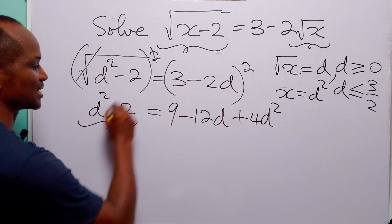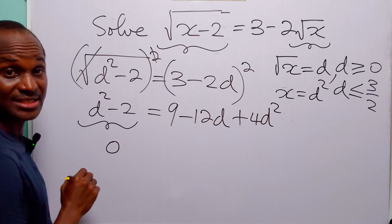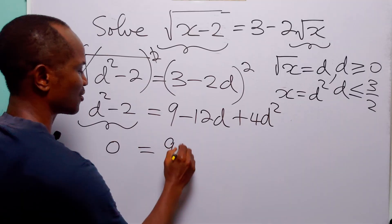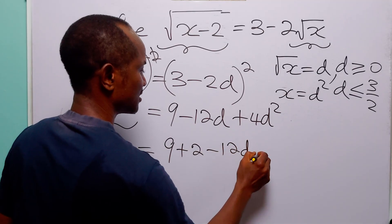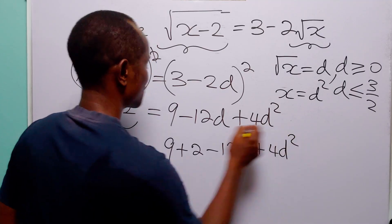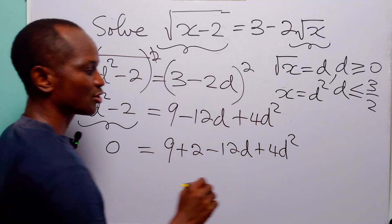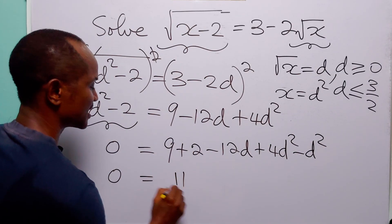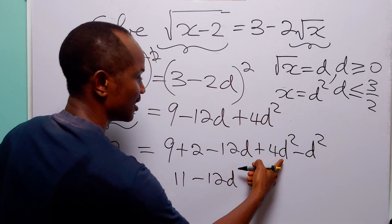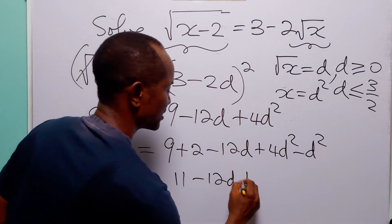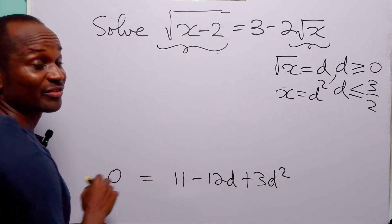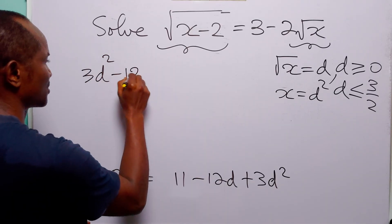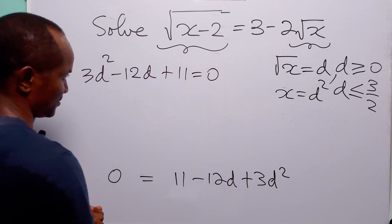Now let us move these two terms over to the right-hand side. When we do that, we have 0 on the left-hand side, equal to 9, minus 2 going over becomes plus 2, we have minus 12d, we have 4d squared, and d squared going over gives minus d squared, leaving 3d squared. So we have the quadratic equation: 3d squared minus 12d plus 11 is equal to 0.